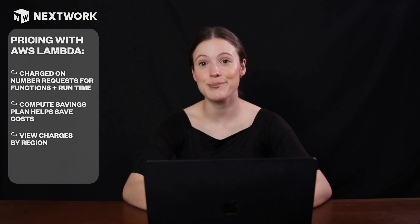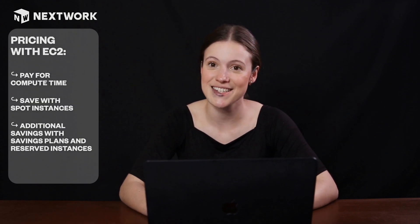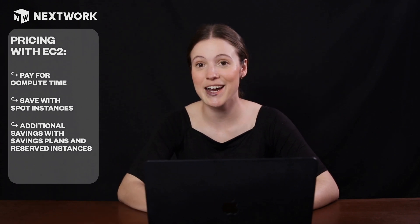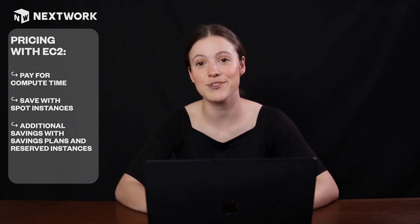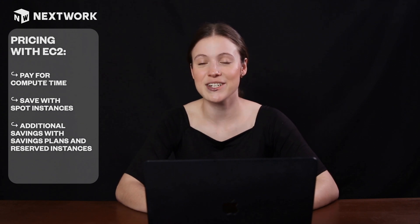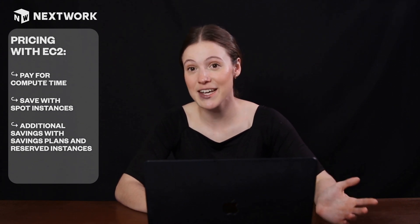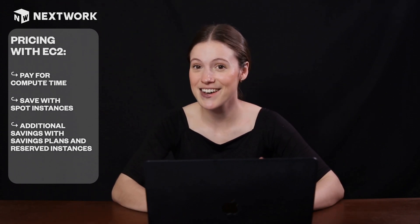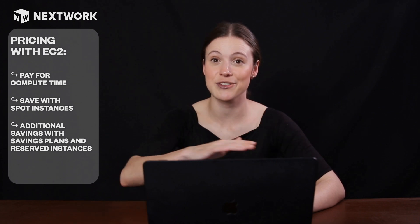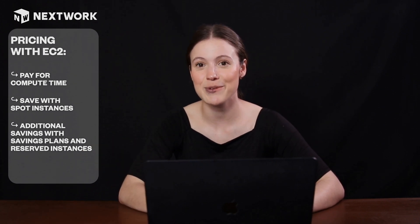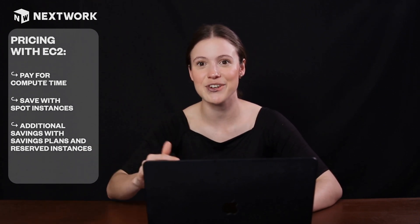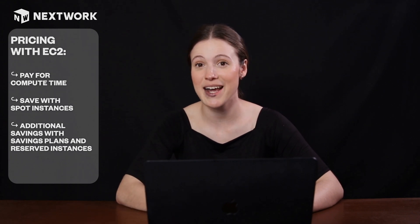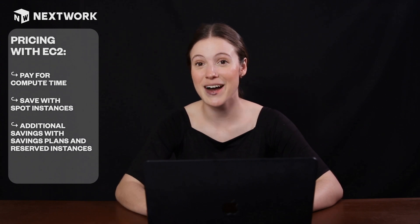With Lambda, you can save by going for a savings plan where you pay more in advance, and on your bill you can see the price per region. With EC2, you're paying for compute time, but you can save quite a bit using spot instances — basically using leftover compute power from someone else's instance. That's cheaper, but a little more risky, so you need a fault-tolerant application. You can also use savings plans and reserved instances to cut costs further.